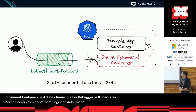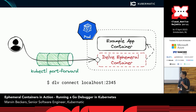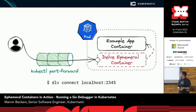Here's a visualization of the target state: we have our example app on one side, and a Delve ephemeral container attached to it. Since we can't easily expose ephemeral container ports, we use kubectl port-forward to tunnel into the pod, opening a local port forwarding to the remote DAP port. Once that's done, it looks like Delve is running locally, so you can use Delve connect or any other tool to connect and debug your application while it's running in a Kubernetes cluster.